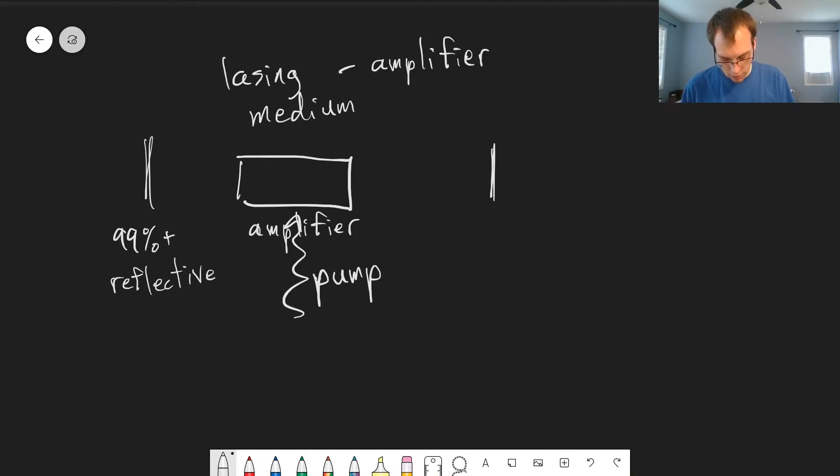And so light that gets generated by the amplifier, by our lasing medium, bounces off this mirror and then goes back through our lasing medium. And so as it passes through the medium again, it creates more photons. Then we have another mirror on this side which we call the output coupler, which is a little bit less reflective, maybe 98% or less reflective.